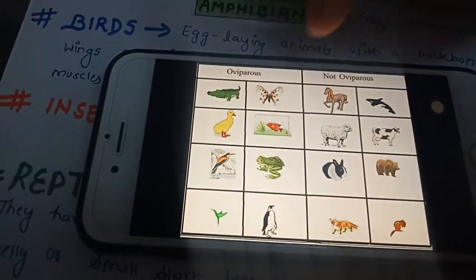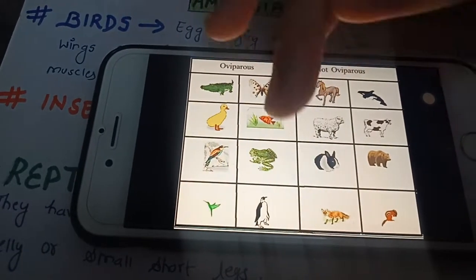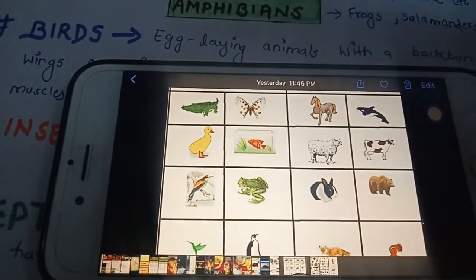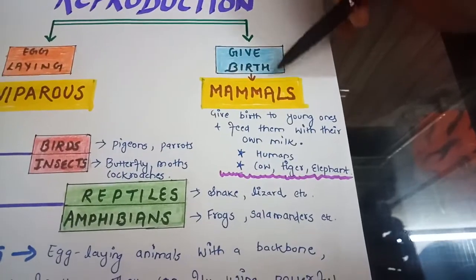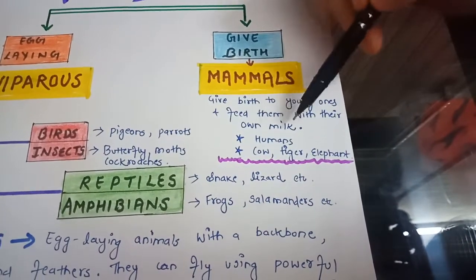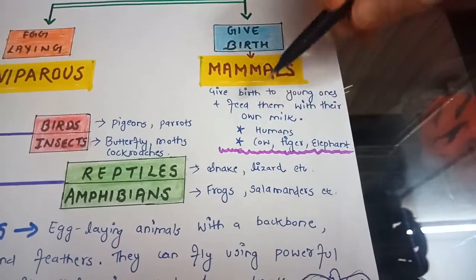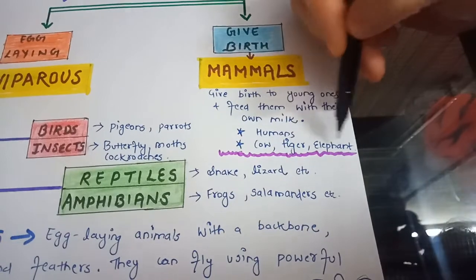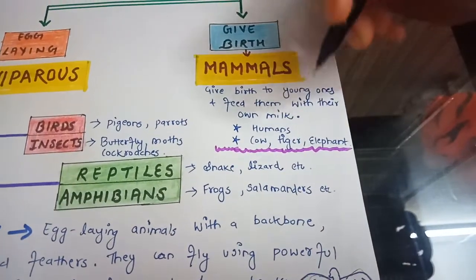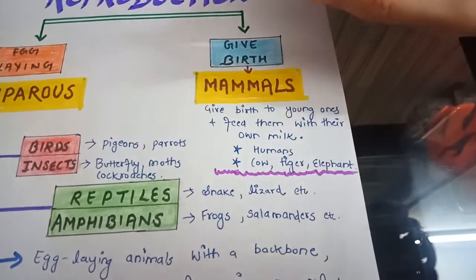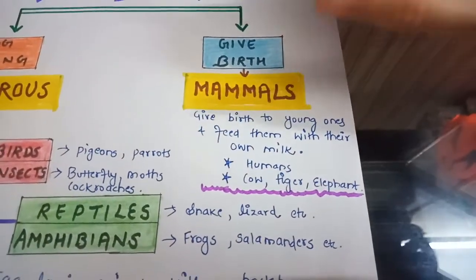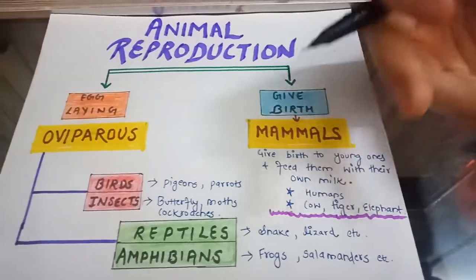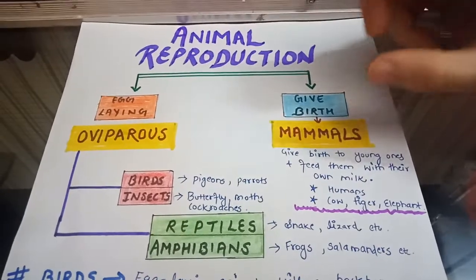This section belongs to egg-laying animals, and this section belongs to mammals. Mammals give birth to their young ones and feed them with their own milk with the help of mammary glands. Examples include humans, cow, tiger, elephant, lion, gorilla, kangaroo, and so on. Mammals have complex brains — they can think and act, and the most developed ones are human beings.